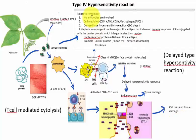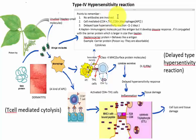The first point is that in type 4 hypersensitivity reaction, no antibodies are involved — that means it is a cell-mediated process. In type 1, type 2, and type 3 hypersensitivity reactions, antibodies are involved. But in type 4, no antibodies are involved. Only cells such as CD4+ cells, Th1 cells, CD8+ cells, and macrophages, which are the antigen presenting cells.